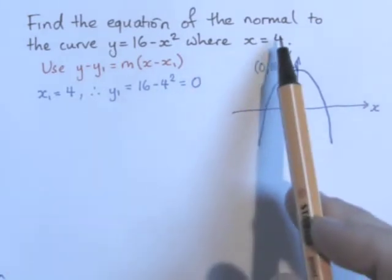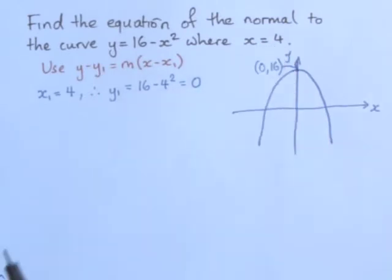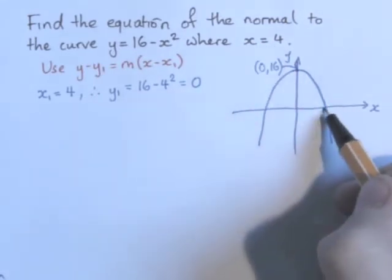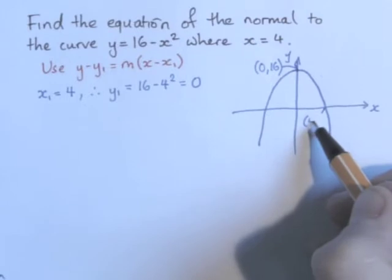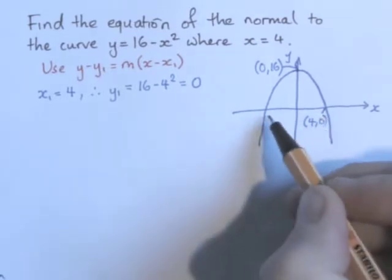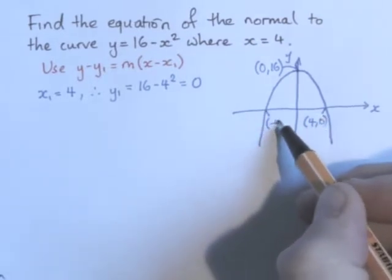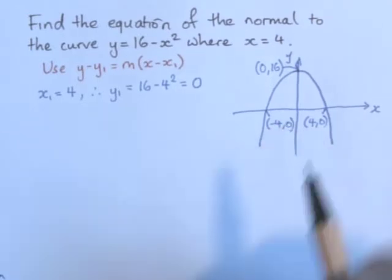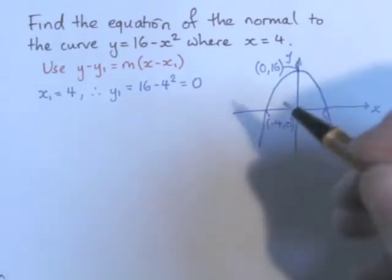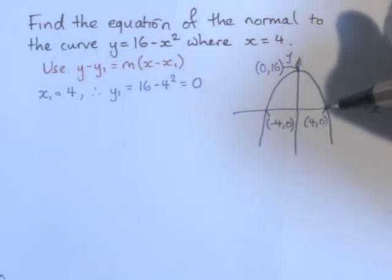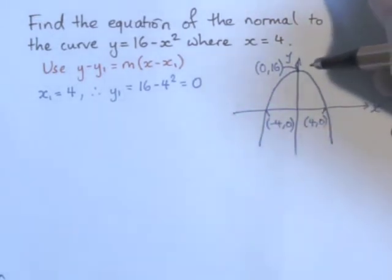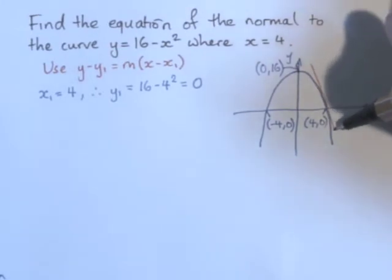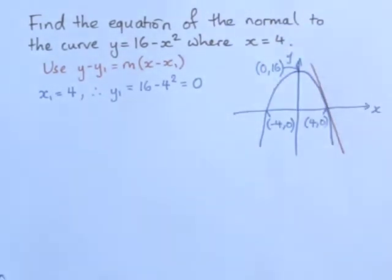We are asked to find the normal where x equals 4. This point is 4, 0, and this point is minus 4, 0. So if we were to draw the tangent at the point 4, 0, that would be the line that we would get.